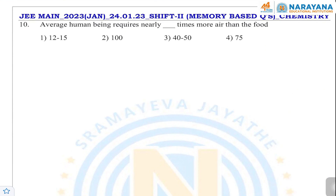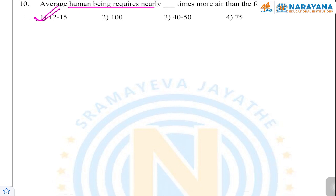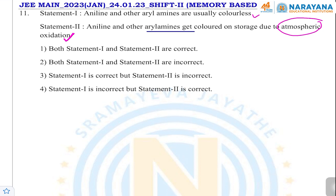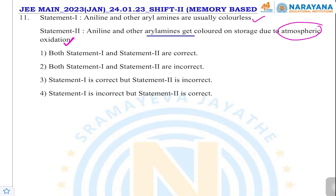The next question is from environmental chemistry — from NCERT lines: the average human being requires nearly 12 to 15 times more air than food. Read NCERT for such questions. The following question: aniline and other aryl amines are usually colorless — this is a correct NCERT statement. They appear colored because atmospheric air oxidizes them into quinones or other colored compounds. The oxidation of aniline and aryl amines leads to dark color after long storage. Both statement 1 and statement 2 are correct.